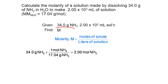The molar mass of NH3 is 17.04 g/mol — you could also calculate this from the periodic table masses of nitrogen and hydrogen. So 34 grams of ammonia divided by 17.04 grams per mole: the gram units cancel out, and 34 divided by 17.04 gives 2.00 moles of ammonia.